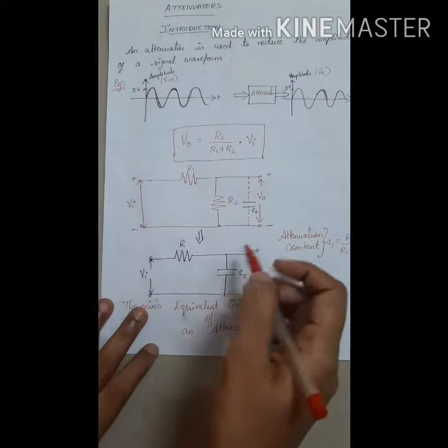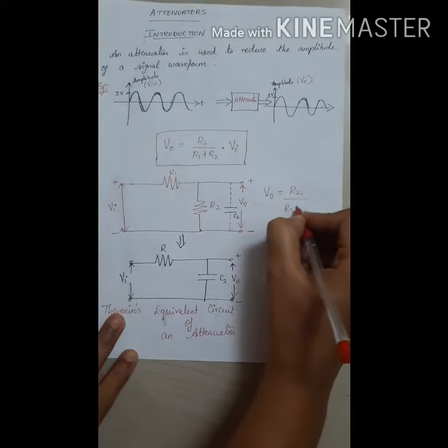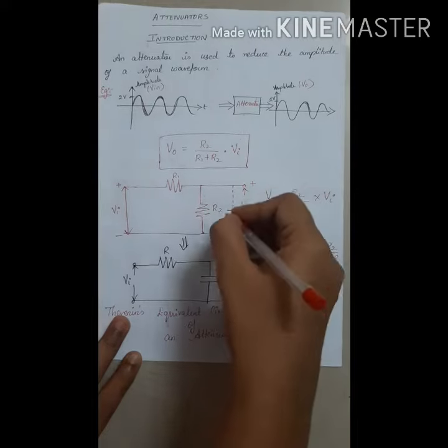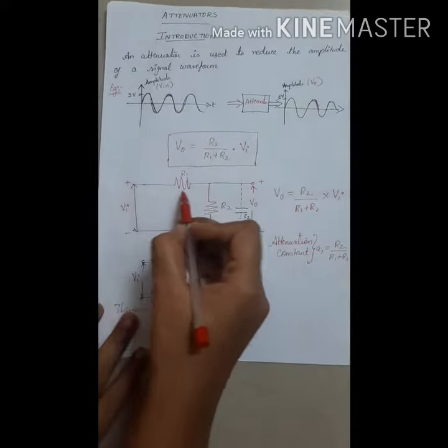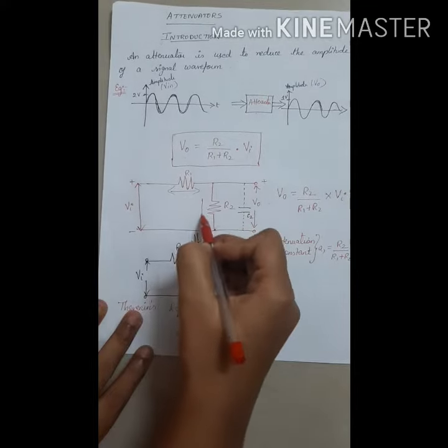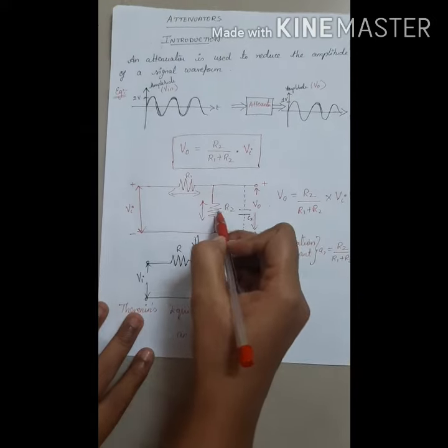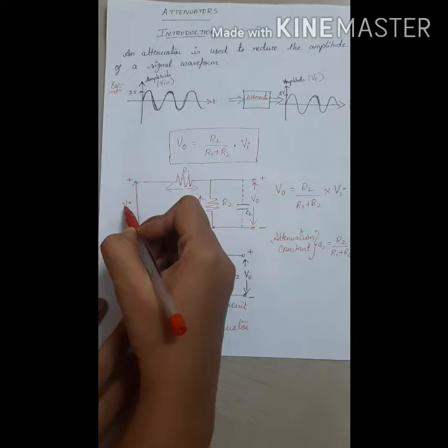The output is given as V0 equals R2 by R1 plus R2 times Vi. This is obtained by the voltage division rule. The voltage divides across R2 and R1, so this voltage can be written as R2 divided by R1 plus R2 times the main voltage Vi.